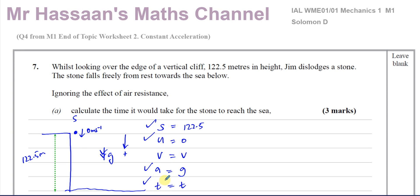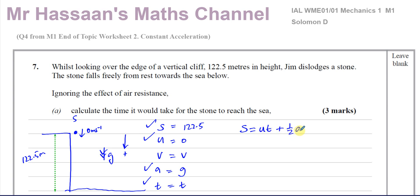We know three of the variables S, U, A, and T, so we think about our equations of motion. We should know: V = U + AT; S = (U + V)/2 × T; S = UT + ½AT²; V² = U² + 2AS; and S = VT − ½AT². Here we have S, U, A, and T, so we use S = UT + ½AT².